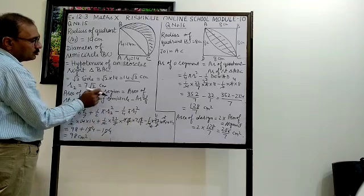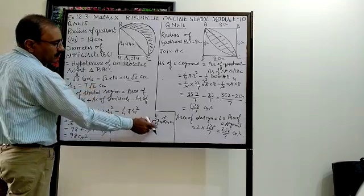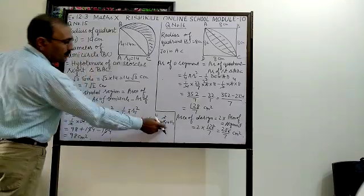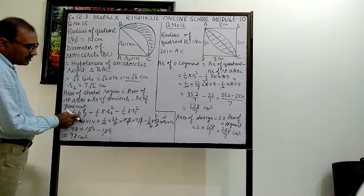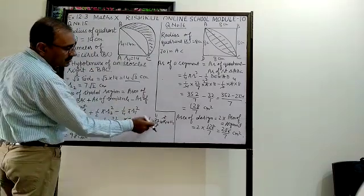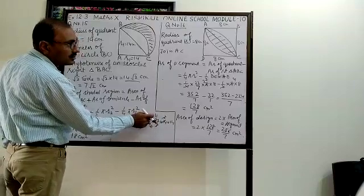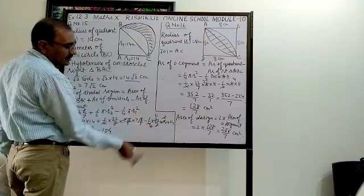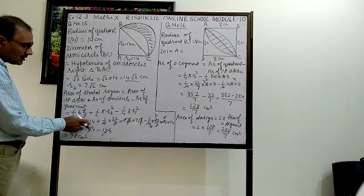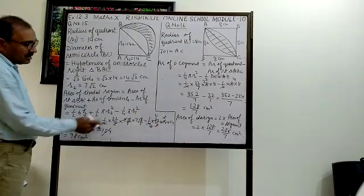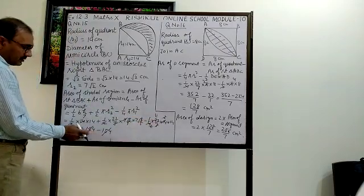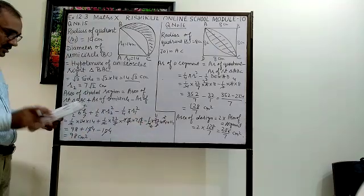Substituting: ½ × 14 × 14 + ½ × (22/7) × (7√2)² − ¼ × (22/7) × 14². Simplifying step by step: 7√2 × 7√2 = 98, so the semicircle area term gives 11 × 14 = 154. The quadrant area term also gives 154. These cancel, leaving the answer as 98 square centimetres for the shaded region.